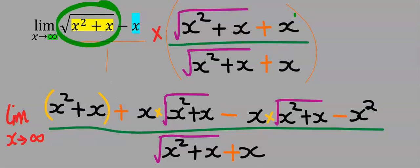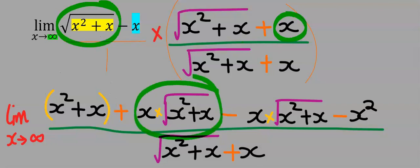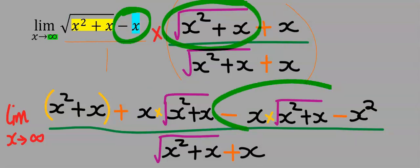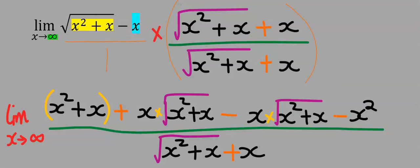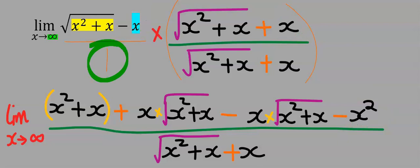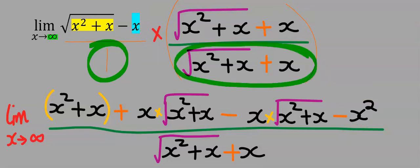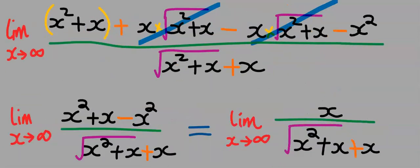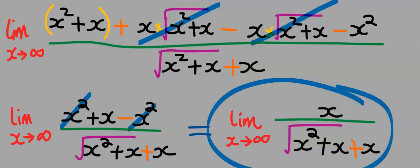Next, this term multiplies x and you get this result. Next, this minus x multiplies the conjugate term and you get the next result — minus x squared. At the denominator we multiply everything here and it returns the next expression. Then the plus will cancel out the minus, and in the remaining function x squared cancels with minus x squared, leaving this function.